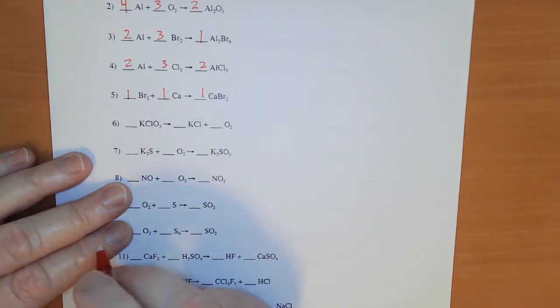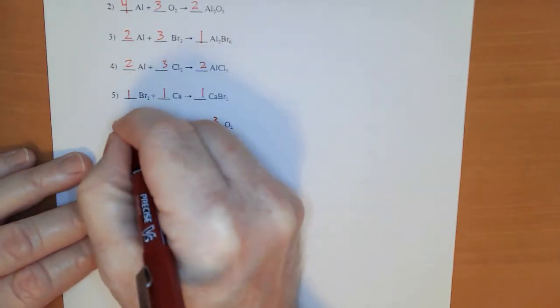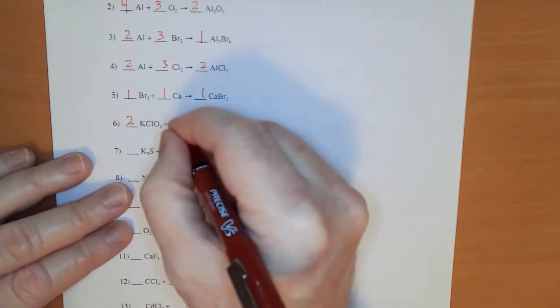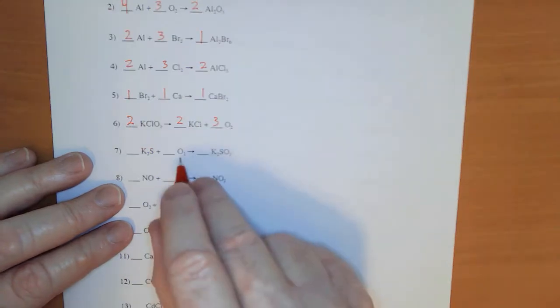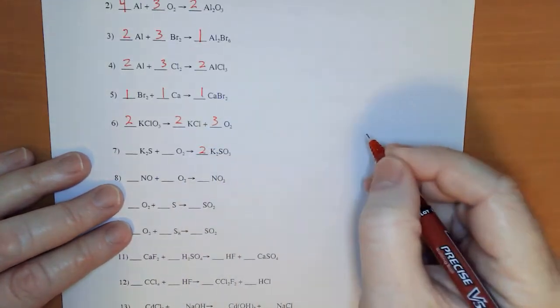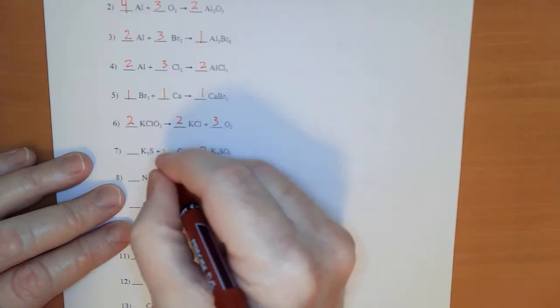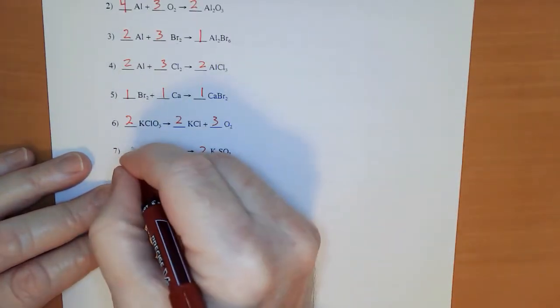Number 6: I see a 3 and a 2 happening for the oxygen again, so I know I need to put a 3 here. That means I have to put a 2 there, and I put a 2 right there. Now, 2 oxygens and 3 — so I'm going to have to put a 2 there, which means I'm going to have to put a 3 there, which means I'm going to have to put a 2 there on the K₂S.